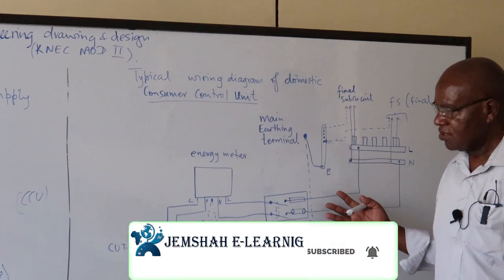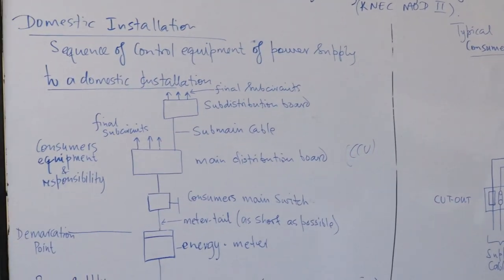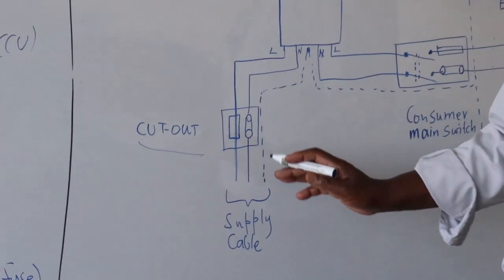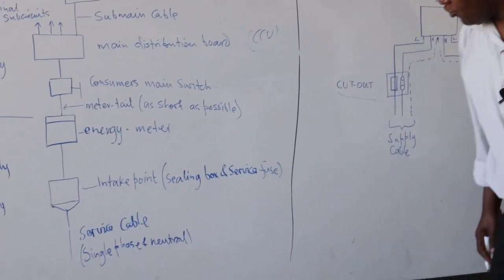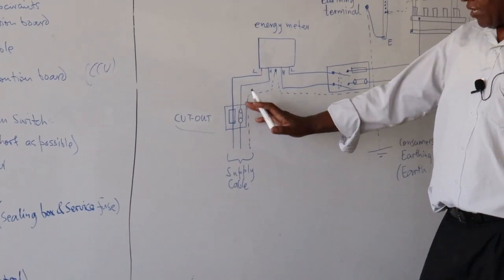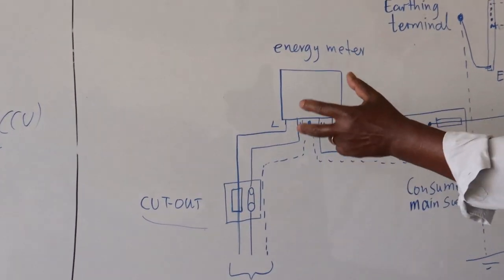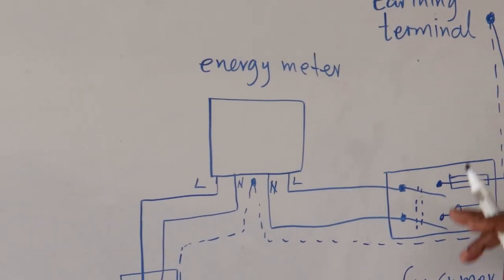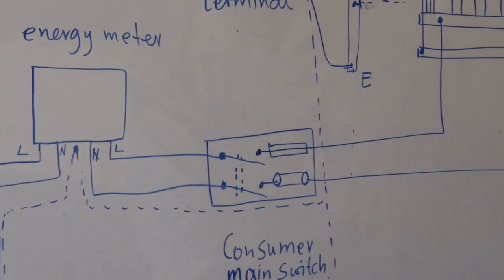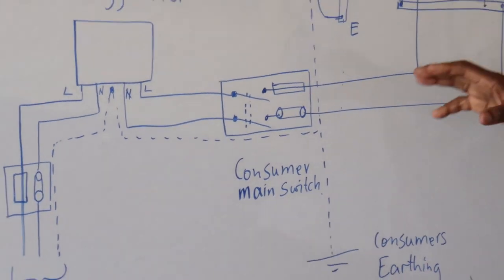Here you have a typical wiring diagram corresponding to the single line diagram I've drawn. The power supply cable comes in. There is what we call the cutout, which I've referred to as the intake point. There's usually a fuse and a link — again, this is KPLC equipment. Then it comes onto the energy meter. From the energy meter, we go to the main consumer switch, whereby you can isolate if somebody's working. And then from the consumer's main switch, it comes onto the distribution board we talked about.